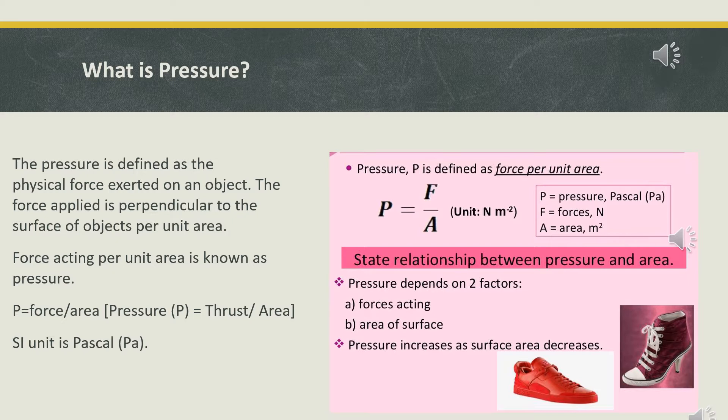We can measure the effect of force using a physical quantity called pressure. Pressure is defined as the physical force exerted on an object, the force applied perpendicular to the surface of objects per unit area. Another definition: pressure is defined as the force acting on a unit area of a surface. The formula is pressure equals force divided by area on which force is acting. The SI unit of pressure is Pascal (Pa). Thus one Pascal is the pressure applied when a force of one newton acts on an area of one meter square.